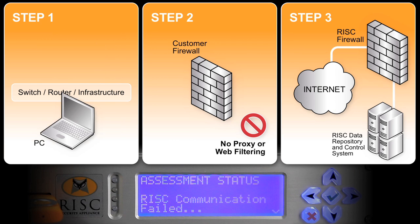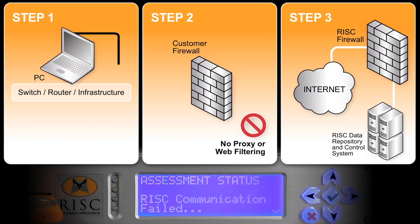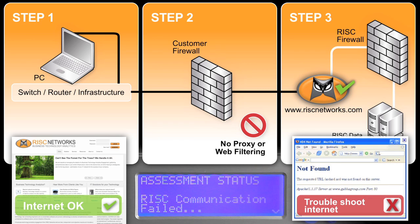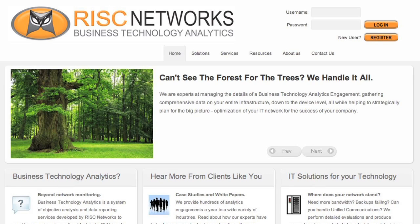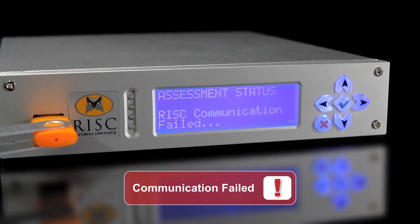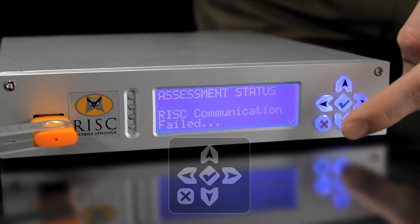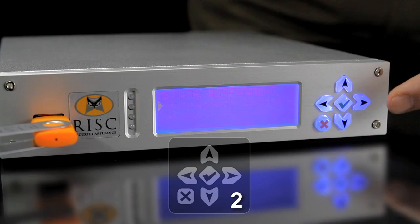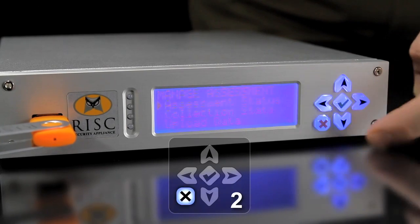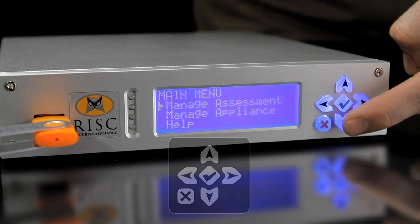Using the same switch port as the RN100, configure your computer with the same IP address, default gateway, and DNS server as was used on the RN100. If you can reach risknetworks.com from your computer but the RN100 LCD screen still shows 'Risk Communication Failed' after re-bootstrapping, please follow the procedure to produce an error log file and email it to support at risknetworks.com.